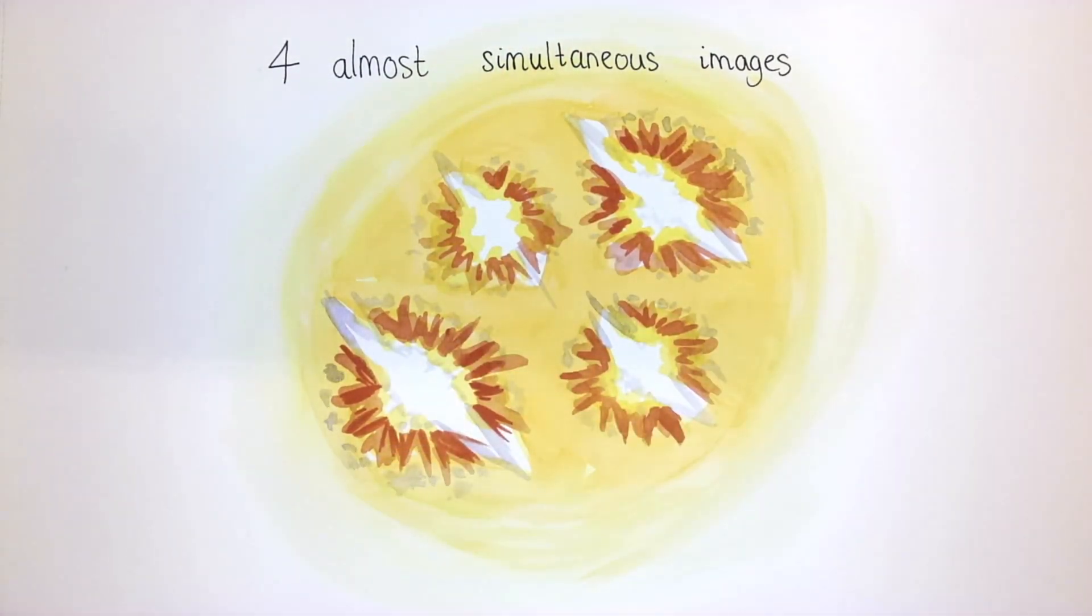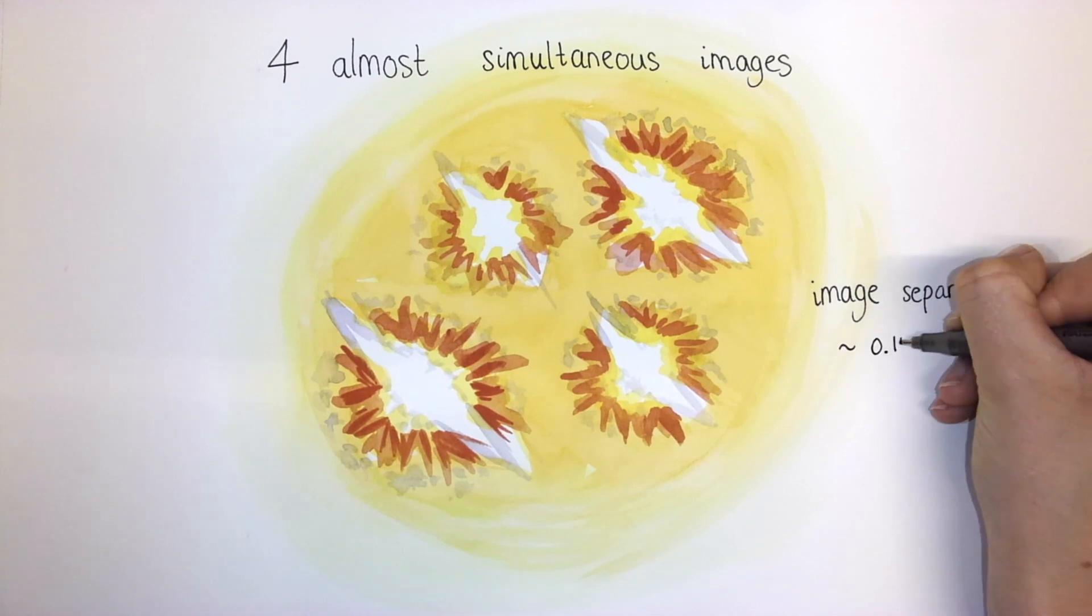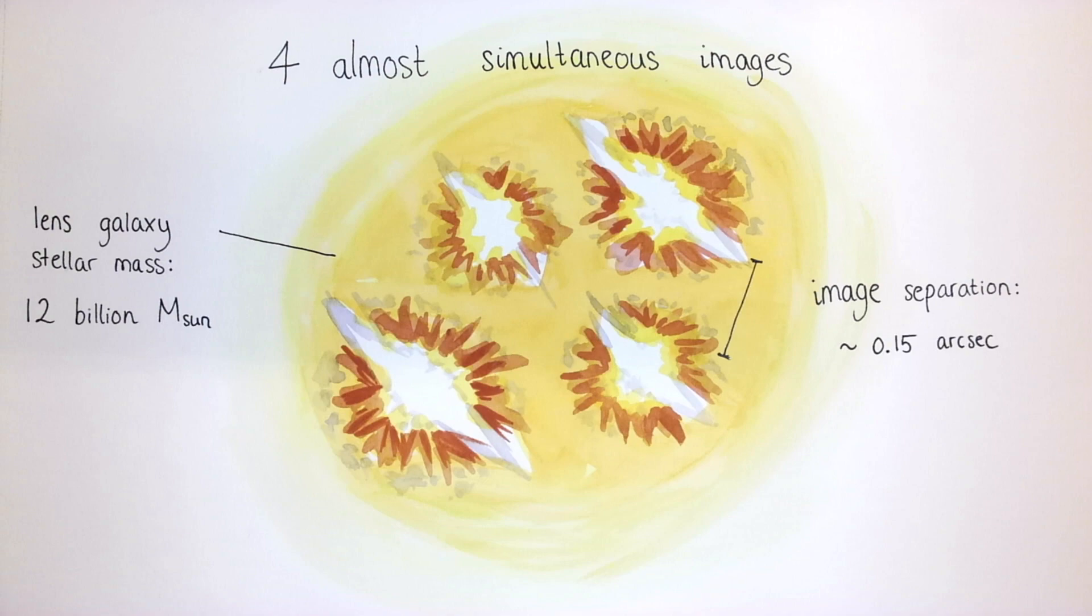We also learned that the Supernova Zwicky system is extremely compact. With image separations of around 0.15 arcseconds, or 10 to the minus 5 degrees, it's one of the smallest lens systems ever found. Seeing Supernova Zwicky from Earth is comparable to reading a newspaper from a distance of 10 kilometers away. We measured the stellar mass of the lens galaxy to be around 12 billion solar masses, quite light for a galaxy that acts as a gravitational lens.